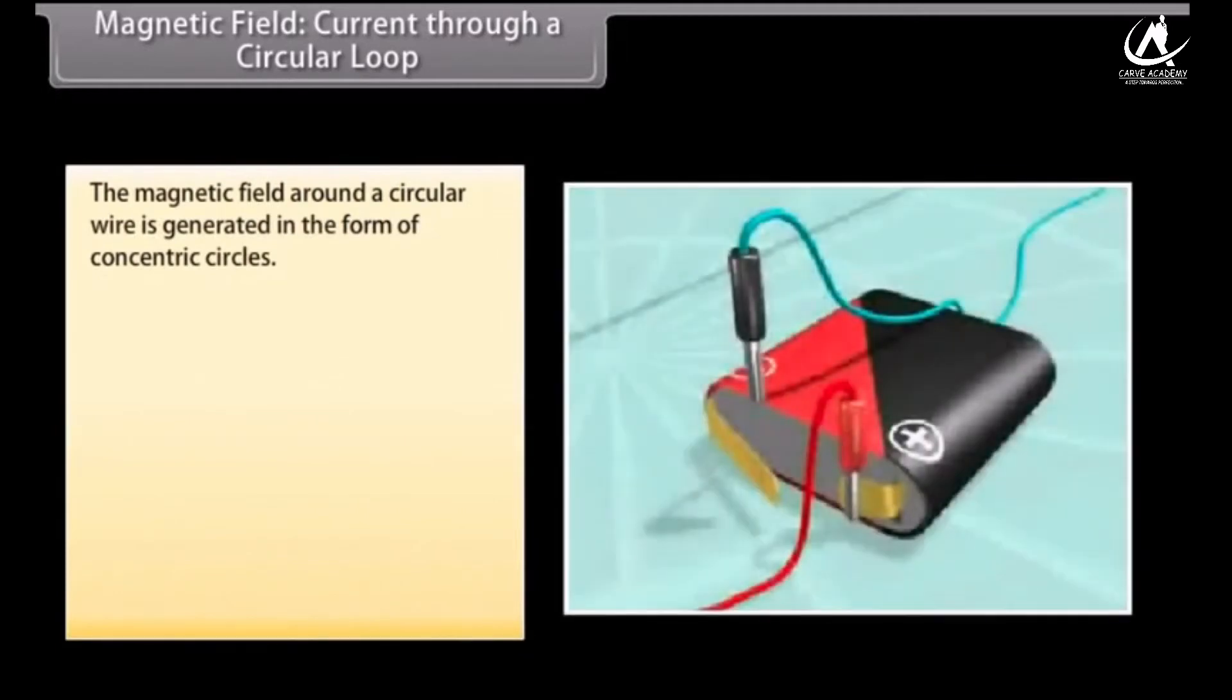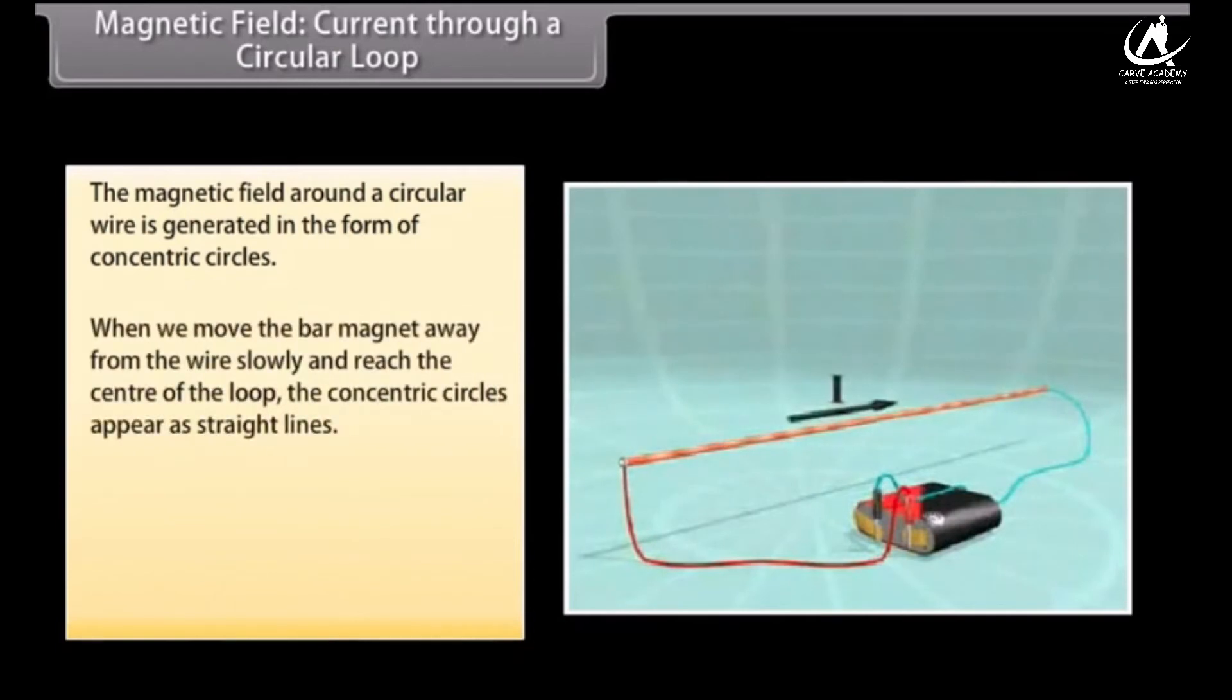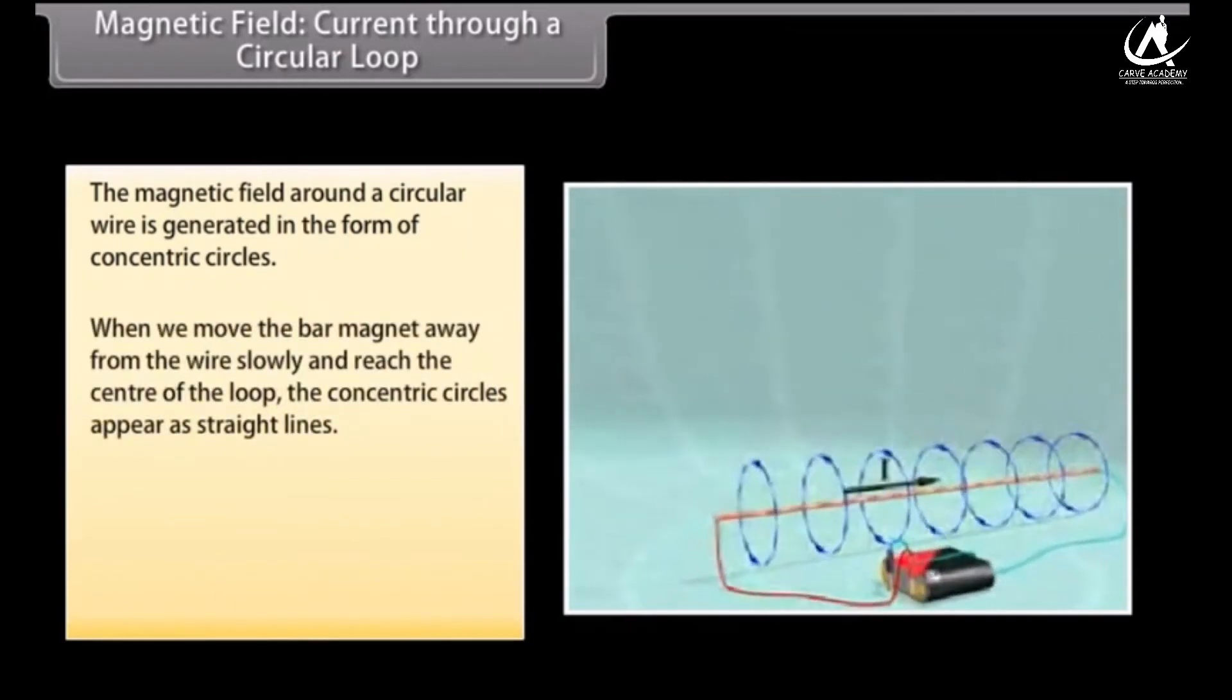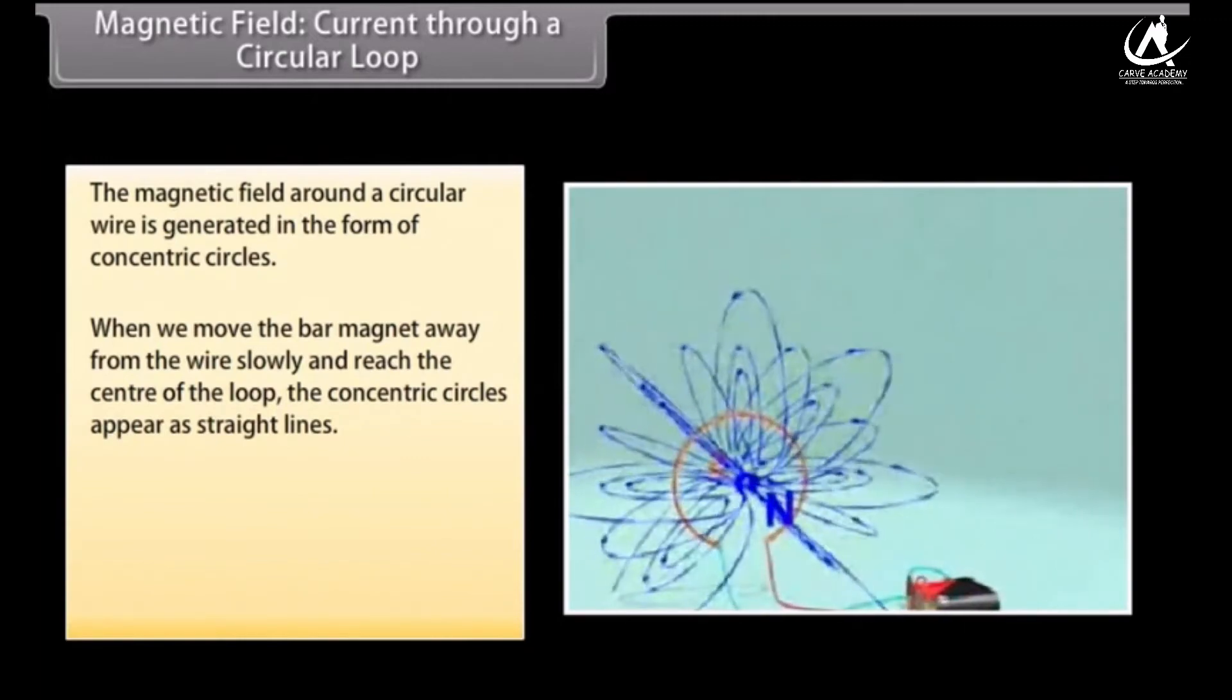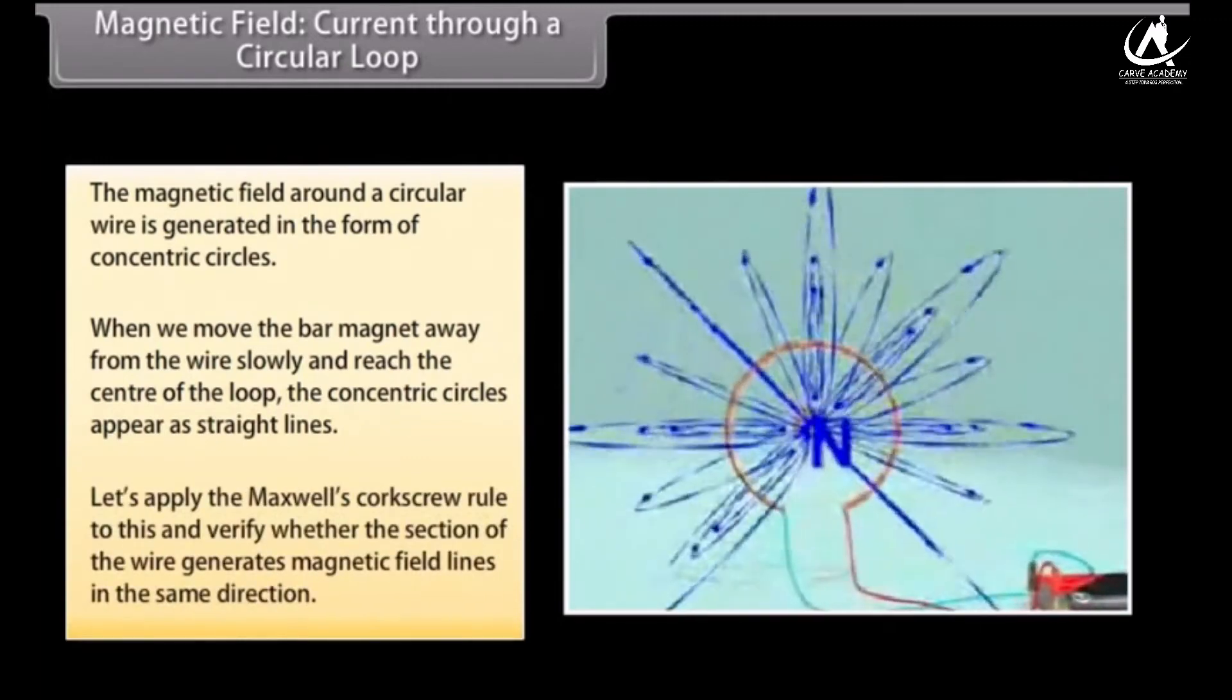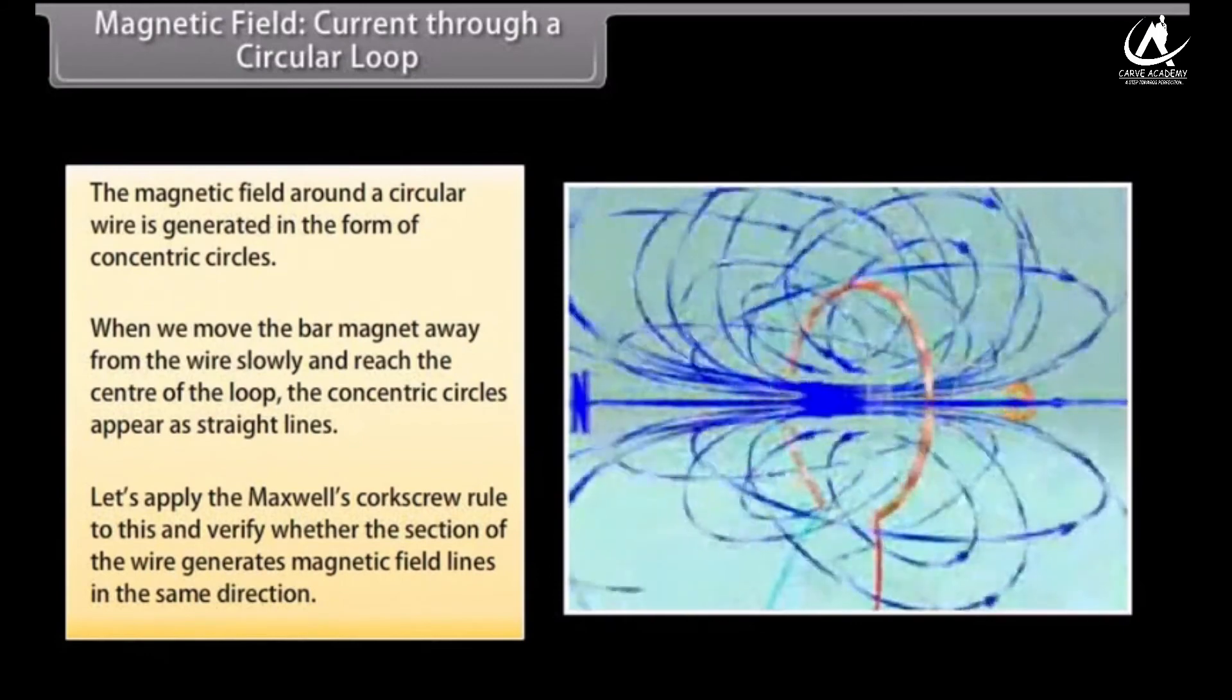Magnetic field current through a circular loop. Let us now look at what happens when the wire through which we passed the current is placed in a circular manner. The magnetic field around it is generated in the form of concentric circles. Try moving the bar magnet away from the wire slowly. By the time we reach the center of the loop, the concentric circles appear as straight lines. The entire magnetic field appears as a straight line. Now try applying Maxwell's Corkscrew Rule to this and check whether every section of the wire is able to generate magnetic field lines in the same direction.